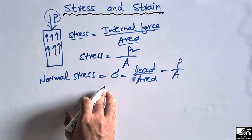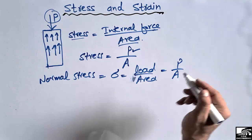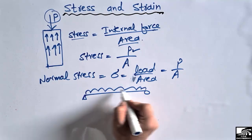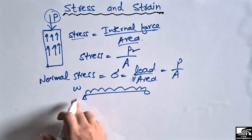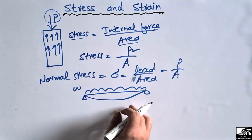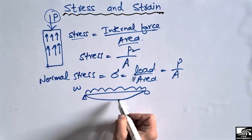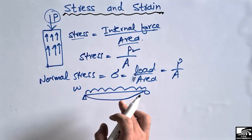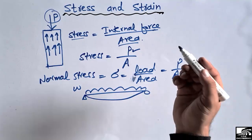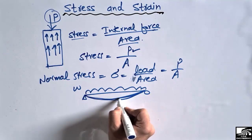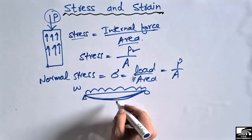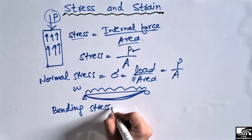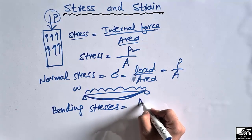We have another type of stress that is mostly common in beams. Consider a simply supported beam with a load of magnitude W. Due to this load, the beam will show deflection and stresses will be created inside it. These stresses are not normal stresses — they are called flexural or bending stresses, because the beam bends due to the applied load.